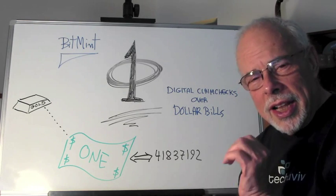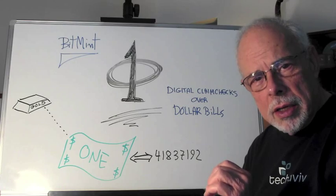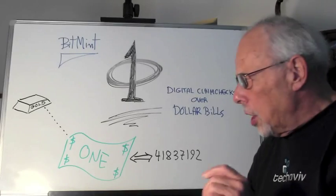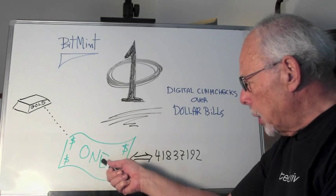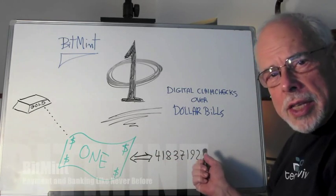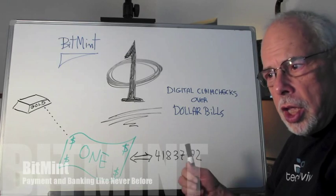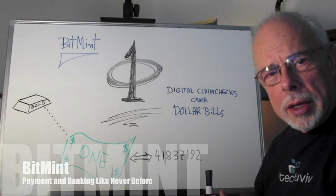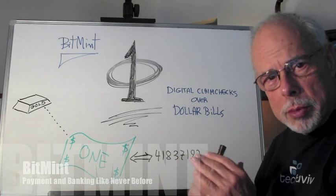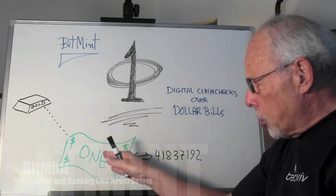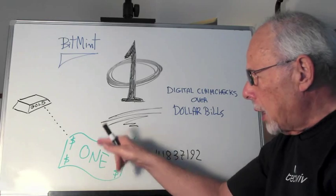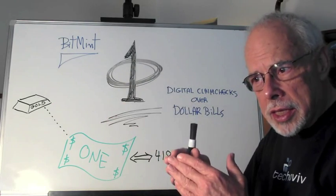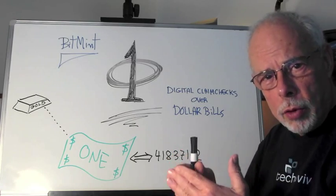BitMint: a digital claim check over the dollar. You hand over a dollar bill, you get a sequence of digits. You bring back those digits, you get your dollar back. That's what BitMint is. The dollar bill itself used to be a claim check against a piece of gold — that is how money evolves.